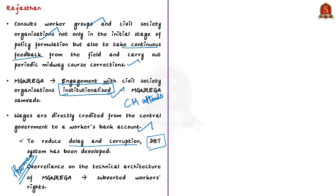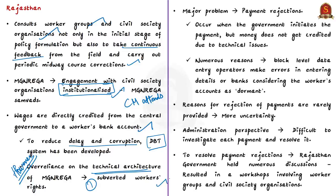The first problem is there is over-reliance on technical architecture. Because of this over-reliance on technical aspects, things can go wrong and ultimately the burden is on the worker. He has to run pillar to post, knocking on the doors of various government officials, banks, panchayat officials, etc.